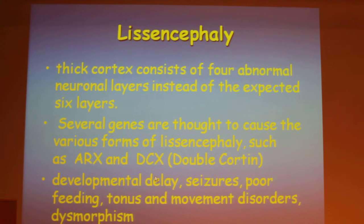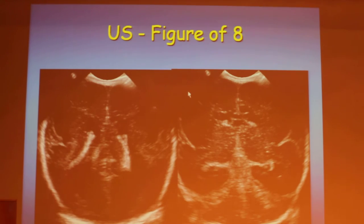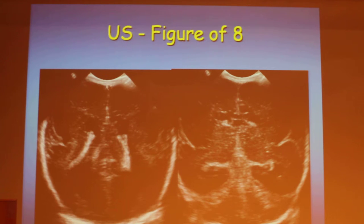This case presents with developmental delays, seizures, poor feeding, tonic movement disorders, and dysmorphism. The classical figure-of-eight sign, seen here on ultrasound — all we see is just the sylvian fissure and no other sulci or gyri.